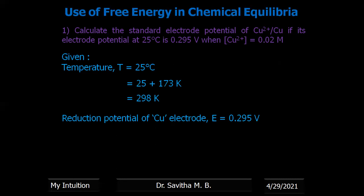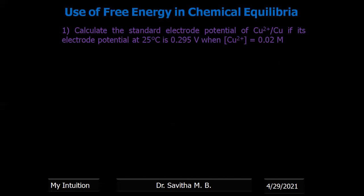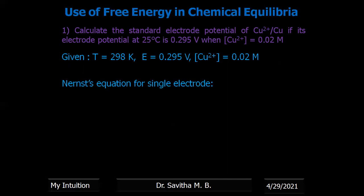The reduction potential of copper metal, E(Cu), is given as 0.295 V. The concentration of copper ions, Cu²⁺, is also given as 0.02 molar. So we have temperature, E(Cu), and the concentration of copper — now we need to find the standard electrode potential of copper using the Nernst equation.